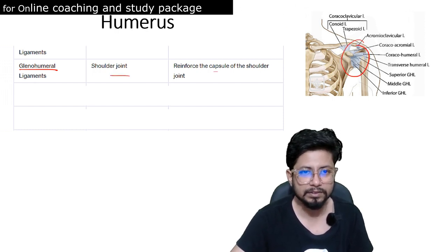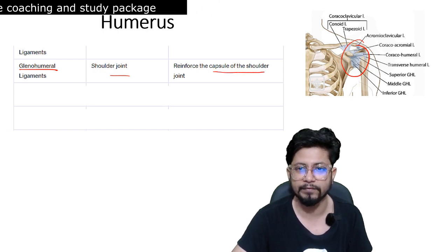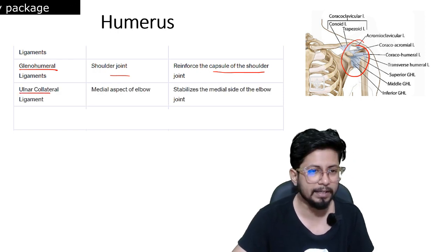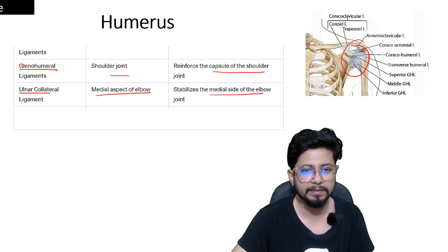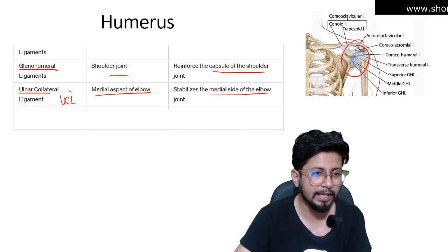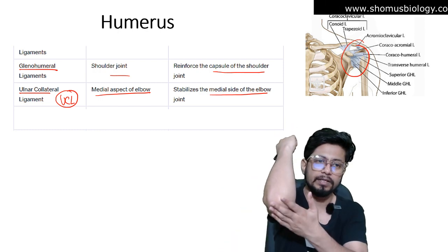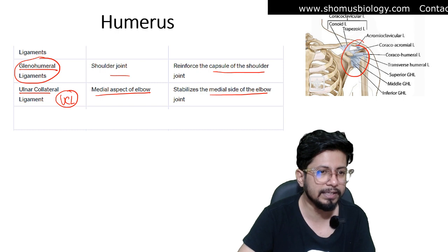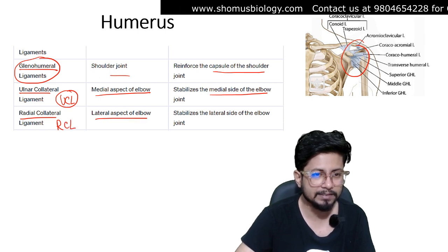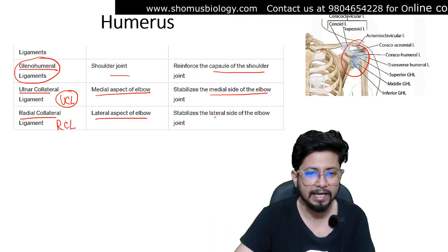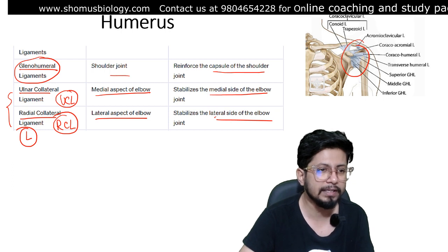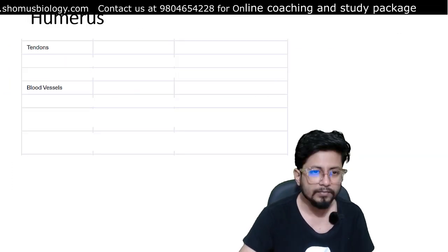Now let's move on to the ligaments. The glenohumeral ligament is present at the shoulder joint — it reinforces the capsule of the shoulder joint where the humerus attaches. The ulnar collateral ligament, or UCL, is on the medial aspect of the elbow and stabilizes the medial side of the elbow joint. The radial collateral ligament, or RCL, is on the lateral aspect of the elbow and stabilizes the lateral side. So UCL and RCL are part of the elbow joint, while the glenohumeral ligament is part of the shoulder joint.